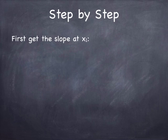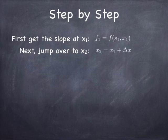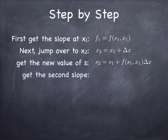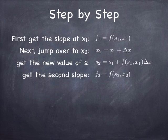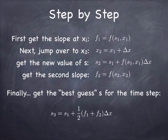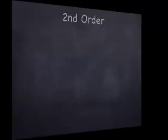Let's take that step by step. First, we get the slope at x1. We'll call that f1. Then we jump over to x2 and we evaluate the slope at x2. s2 is s1 plus the slope evaluated at x1 times delta x. Then we get the slope at that point. We evaluate the slope at point x1 plus delta x and we call that f2. Then we get the best guess for the intermediate slope. That's the average of f1 and f2. We multiply that by delta x and we add that to s1. That becomes s3, which is our new guess at the state at x1 plus delta x. That's the idea.